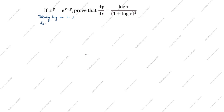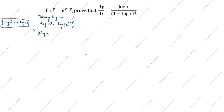Log x power y is equal to log e power x minus y. What is the formula? Log m power n equals n log m. We will split as per this formula: y log x is equal to x minus y times log e.